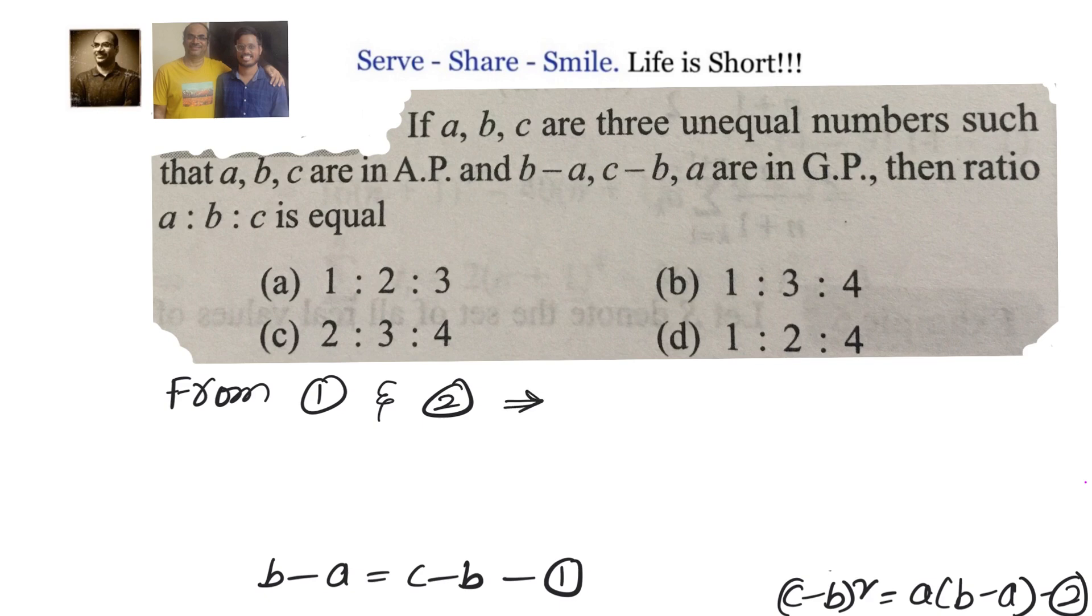So we will get B minus A whole square equals A into B minus A. Since A is not equal to B, we can safely cancel out B minus A. We will get B minus A equals A, or B equals 2A.